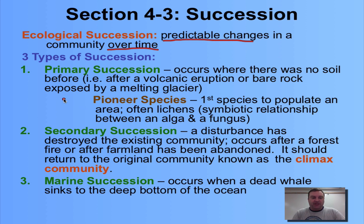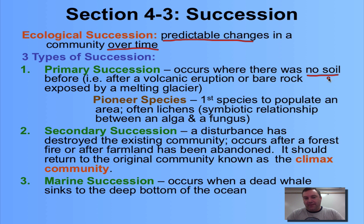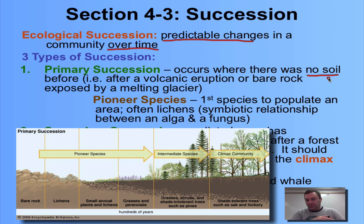We have three types of succession. The first is called primary succession, and this occurs where there was no soil before and therefore no chance for a community to occur. This will happen after, say, a volcanic eruption or a glacier melting that exposes rock — something that has basically wiped out or created new land.